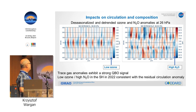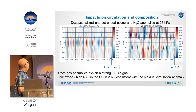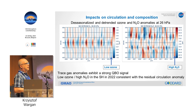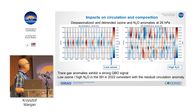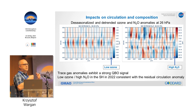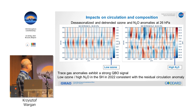These are anomalies at 26 hectopascals of ozone and N2O. The main signal is the QBO in both species, as expected, limited to 45°S to 45°N. But in 2022 we have a rather pronounced dipole in ozone and also in N2O, consistent with an anomalous circulation induced by the additional water vapor from Tonga. This is very much a work in progress — I just wanted to show that we're doing this too.